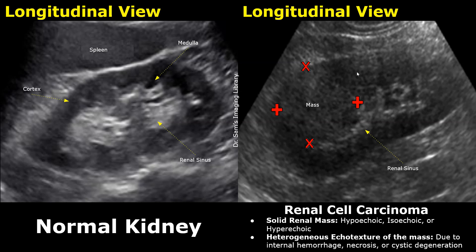The mass has almost similar echogenicity to the renal cortex. RCCs have variable appearances, so the renal mass can be either hypoechoic, isoechoic, or even hyperechoic. Many masses contain heterogeneous areas, which indicate internal hemorrhage, necrosis, or cystic degeneration.